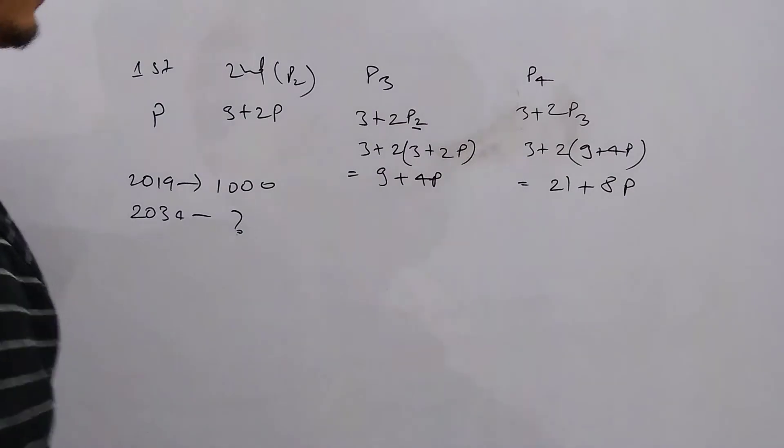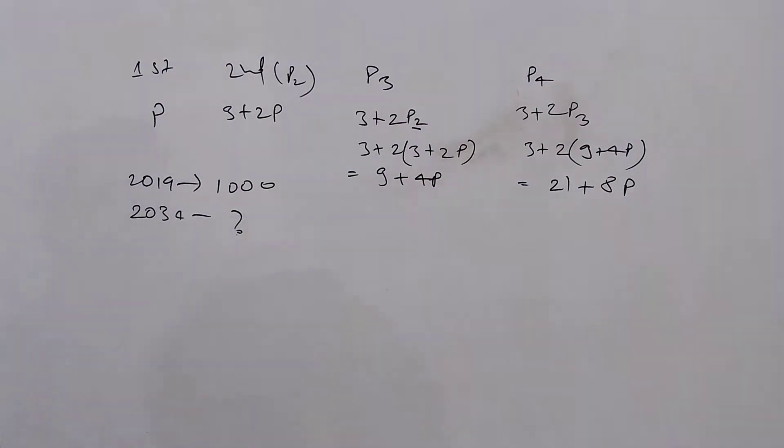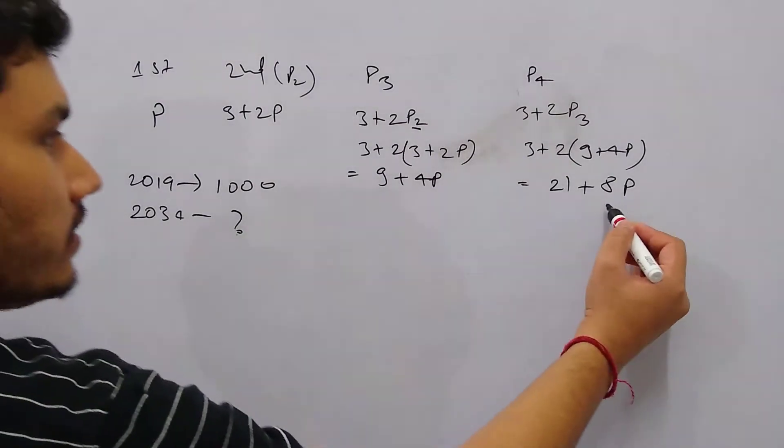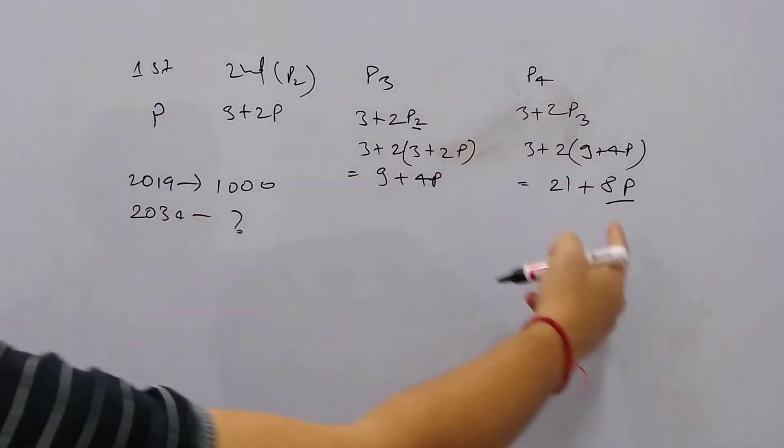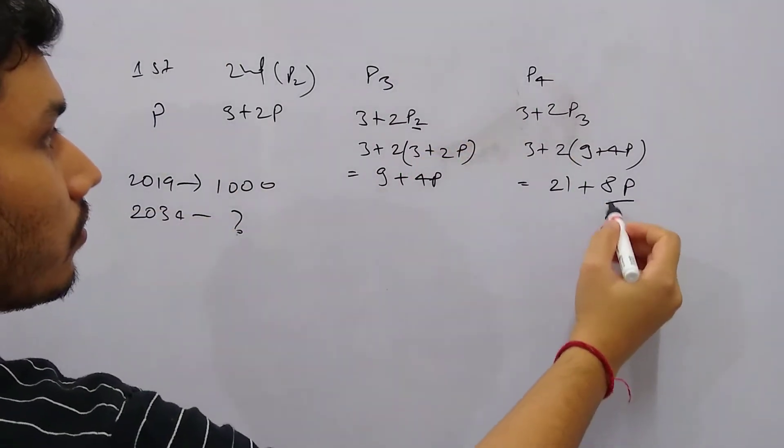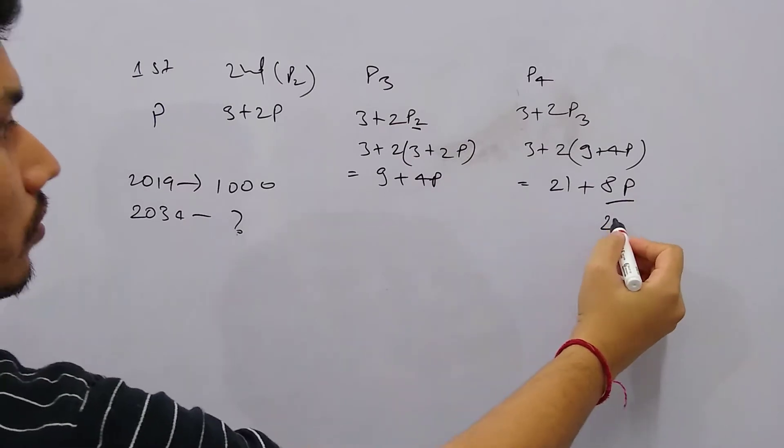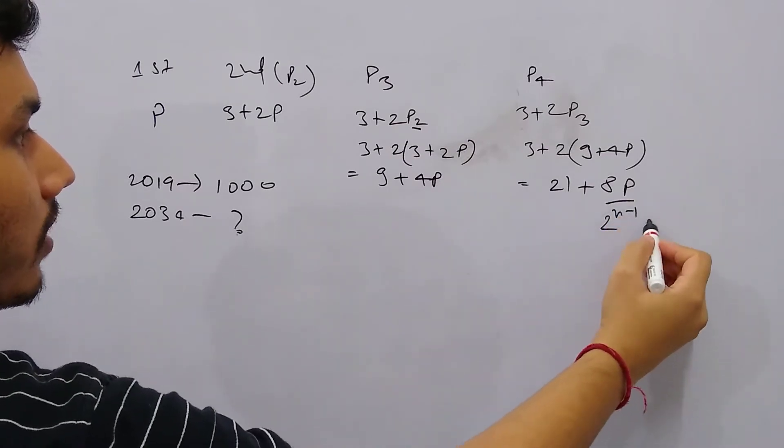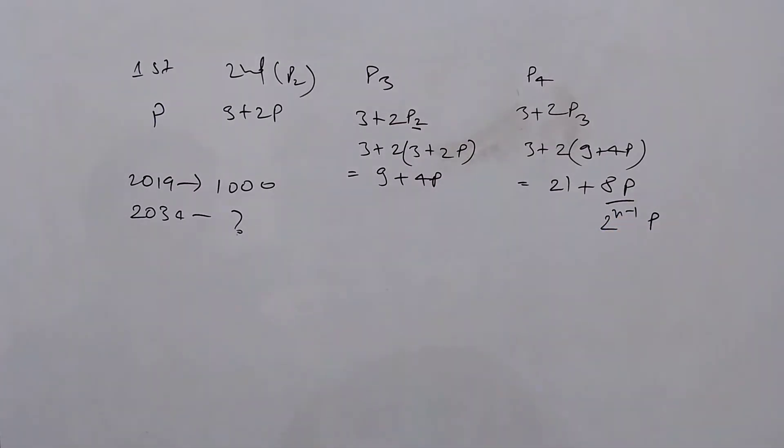So now if we see, for the fourth year it's 8p. So it's like cube of 2, so n minus 1: 2 to the power (n - 1) times p. So then it will become 8p.